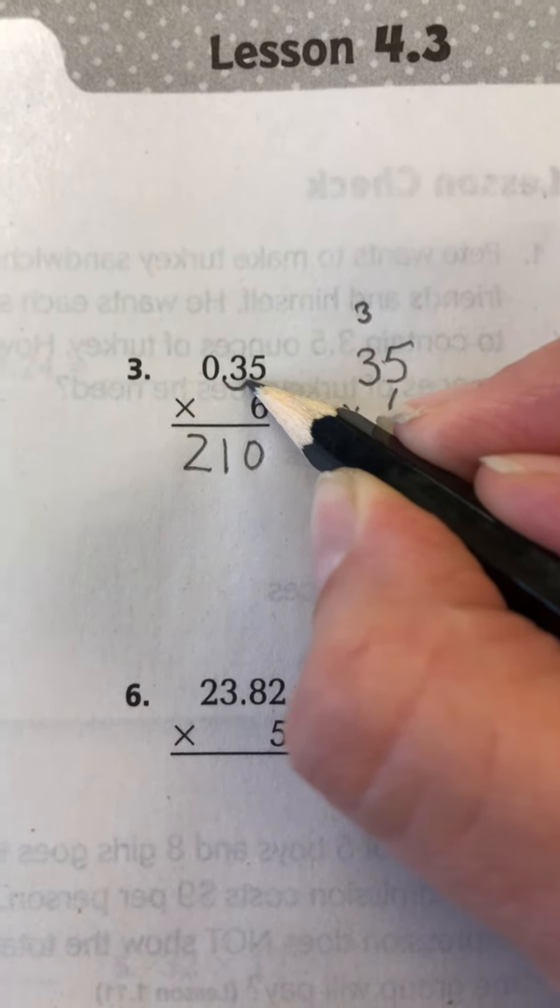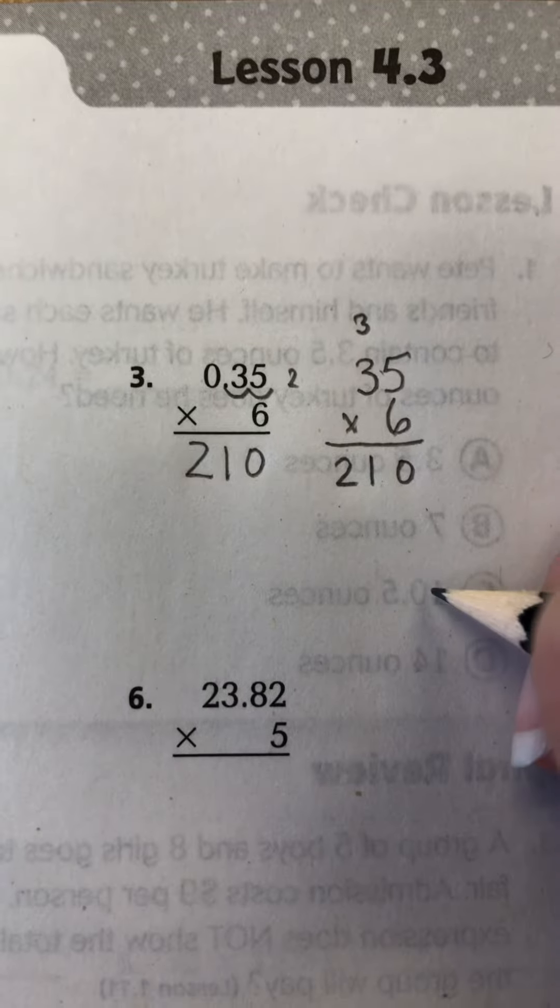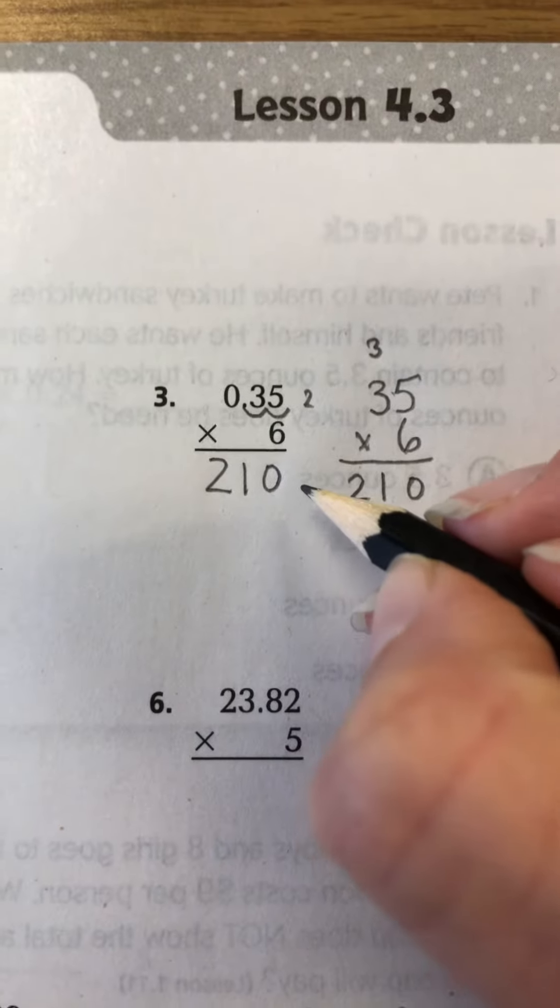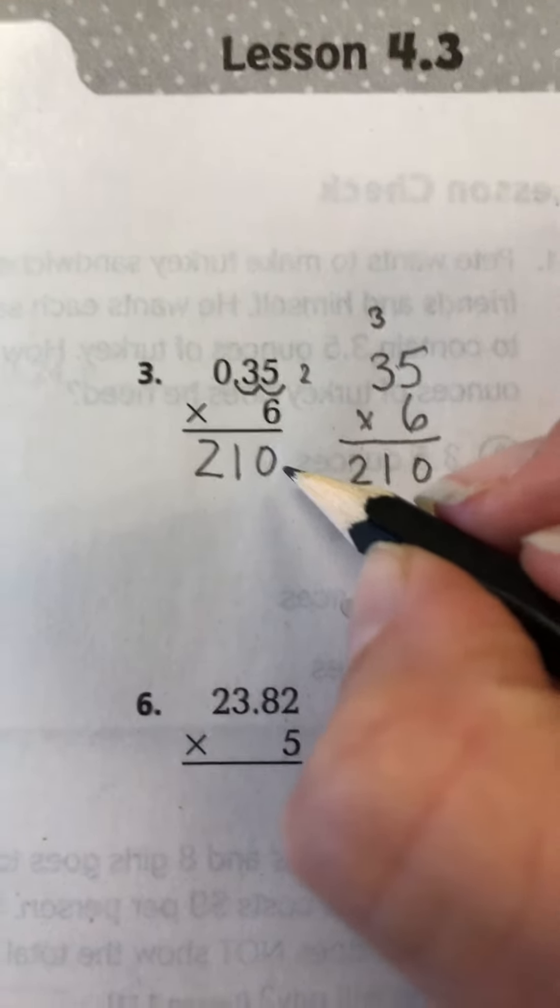And I'm going to take it and I'm going to count how many spaces over it is. So 1, 2. So that is 2 spaces over. Which means in my answer, I'm going to have to put my decimal point 2 spaces over.